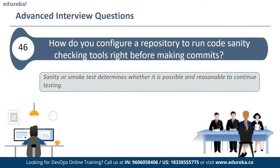The next question is: how do you configure a repository to run code sanity checking tools right before making commits? A sanity or smoke test determines whether it is possible and reasonable to continue testing. This can be done with a simple script related to the pre-commit hook of the repository. The pre-commit hook is triggered right before a commit is made, even before you are required to enter a commit message. In this script, you can run tools such as linters and perform sanity checks on the changes being committed into the repository.